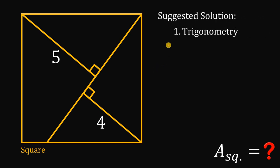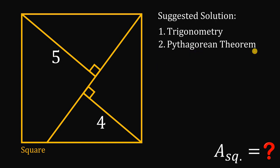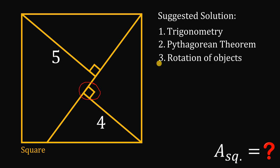The first one, we can use trigonometry. The second one is we can use the Pythagorean theorem, because take note that we have here a lot of right triangles. And the third one, and my favorite, is the rotation of objects. In this solution, you can solve this problem without computation.